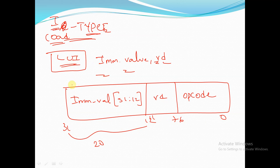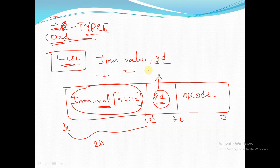In this load-type instruction, what is happening is we are providing the immediate value in the instruction itself, and where this immediate value should be stored is also given in the instruction itself — that is RD, the destination address of the register.